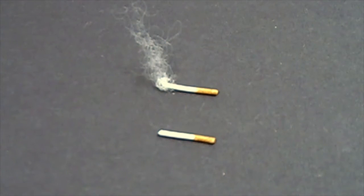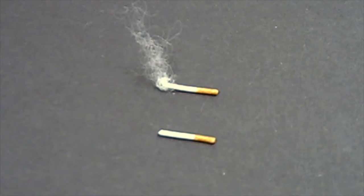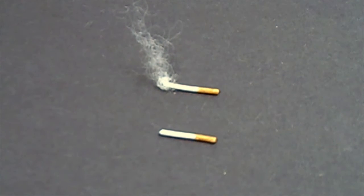Welcome back to another figure prop tutorial. What I'm going to show you how to make today is 1/12 scale cigarettes - one that's lit and smoking, and one that is just regular with no smoke coming out of it. It's a really simple tutorial.